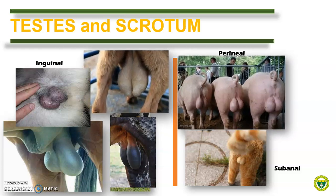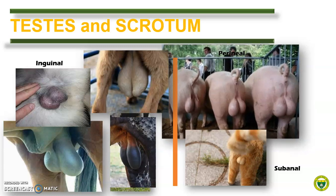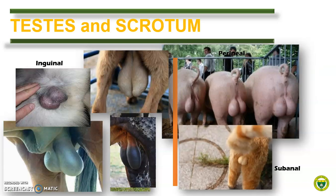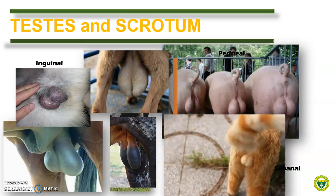In boars, the scrotum has few hairs and is also divided by a deep groove into left and right halves. In tomcat, the scrotum is covered with hairs.